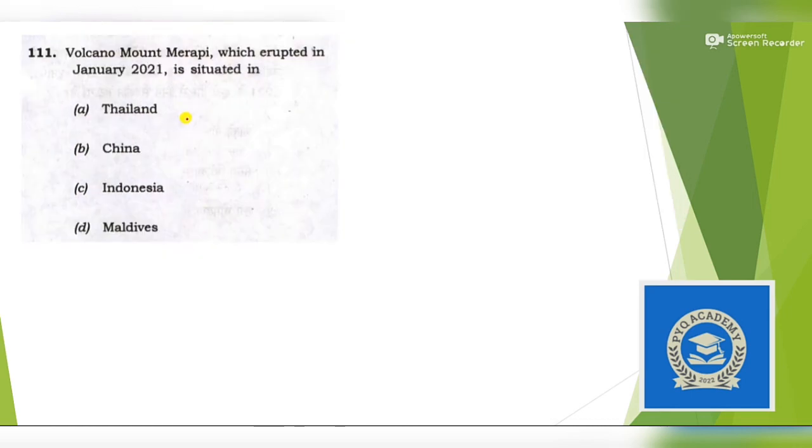Next question: Volcano Mount Merapi which erupted in January 2021 is situated in? This was a question of current affairs, but in future it can also be asked as static geography. Mount Merapi, which is a volcano, is found in Indonesia. Answer is option C.